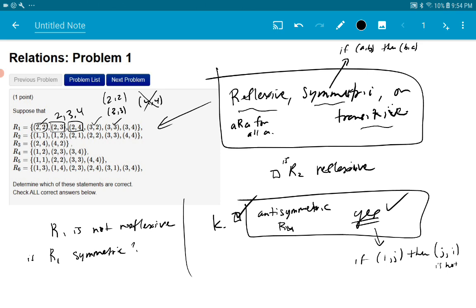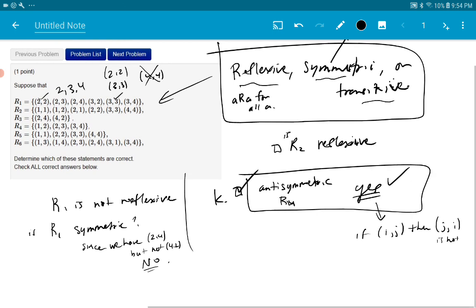2,4 would have to imply that 4,2 is there. Oh, I don't see a 4,2 anywhere here. I don't see 4,2 at all. So it looks like it's not symmetric. So we've got - So since we have 2,4, but not 4,2, no. Make sense? It's not symmetric. It's not reflexive. It's not symmetric.